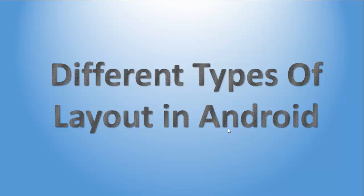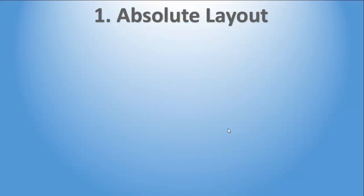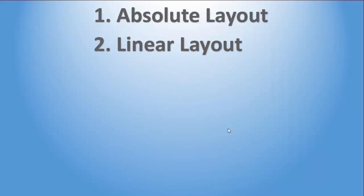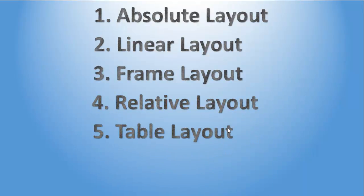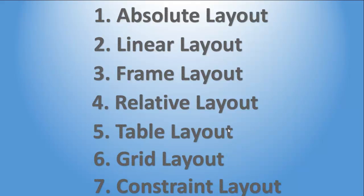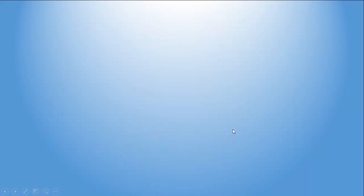This is the first video in Android layouts. We are going to see different kinds of layouts that we can design in Android. The first one would be absolute layout, the second is linear, the third is frame, the fourth is relative layout, the fifth is table layout, the sixth is grid layout, and the seventh is a completely new layout called constraint layout.